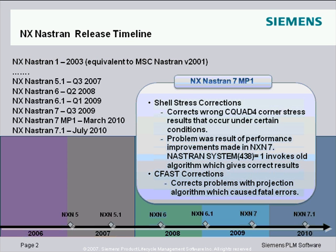We are coming out right now, within a week or two, a maintenance pack for that NASTRAN 7 release — NASTRAN 7 Maintenance Pack 1. We're fixing a couple of bugs identified in that release. One has to do with a shell stress correction: you could get wrong corner stress results on CQUAD4 in certain conditions. Without the maintenance pack, you can use the NASTRAN system cell equals 1 to use the old algorithm and get the correct result, or download the maintenance pack. There's also a CFAS correction where some projection algorithms could cause fatal errors.